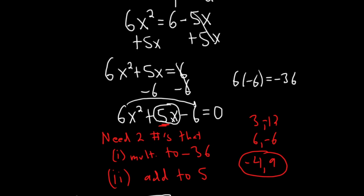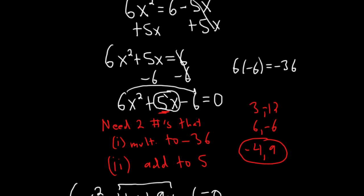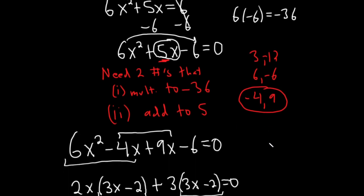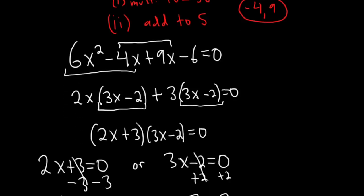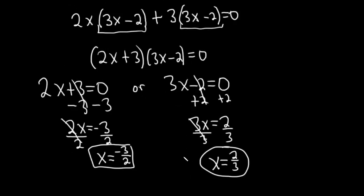We chose to use factoring. In order to factor this, you can use guessing, which I wanted to avoid. Or you can use the AC method. That basically means you multiply this number by this one. And then you need two numbers that multiply to this and add to 5. After some thought, we discovered that it would be negative 4 and 9. Then you take the 5x and you break it up using those numbers. Then you use factor by grouping. And then you're done. Good luck.